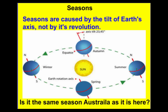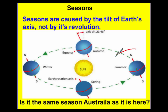Seasons are caused by the tilt of the Earth's axis, not by its revolution. Because Earth has that 23.5 degree tilt, we have different seasons as the Earth revolves around the Sun. The northern hemisphere and the southern hemisphere always experience opposite seasons. Looking at summer, the northern hemisphere is pointed toward the Sun, so it is getting a lot more direct sunlight than the southern hemisphere, which means the northern hemisphere is going to be in summer.